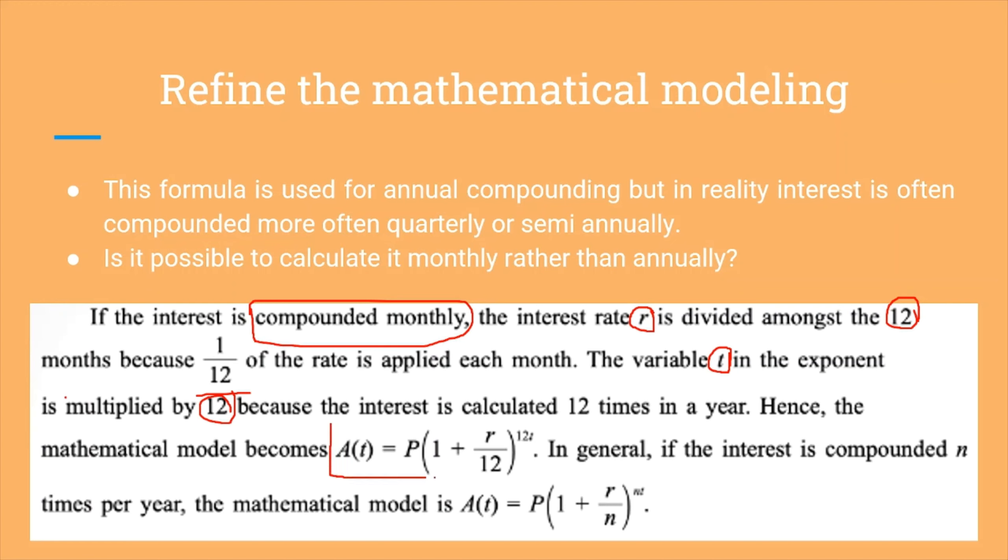So a new mathematical formula is formed as a refined mathematical model. The amount equals the principal multiplied by the interest, remember to divide it by 12, to the power of 12 times T. We can refine the model as 12 for annual, 4 for quarterly, and 6 for semi-annually. We can replace the value as N instead. This is N, just for clarification.